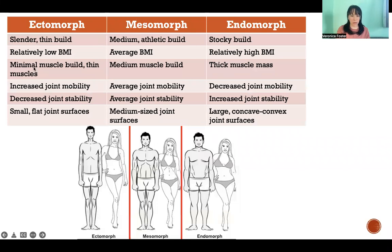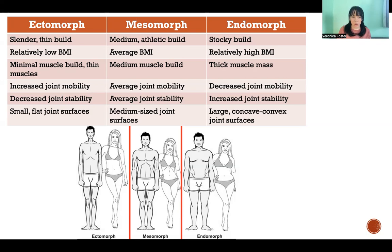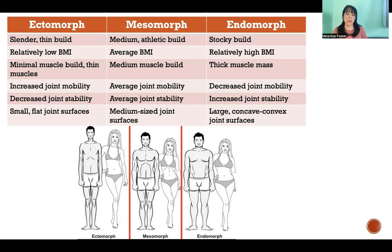So ectomorph, starting all the way on the left here — and that's also on the left in the picture — that's a slender, thin build. They tend to have kind of long, thin limbs, and they might be a little bit taller. They have relatively low BMI with minimal muscle build or thin muscles. This body type also tends to have joint surfaces that are smaller and flatter, which means more joint mobility — easier motion, more range of motion — but the flip side is that with increased joint mobility comes decreased joint stability.